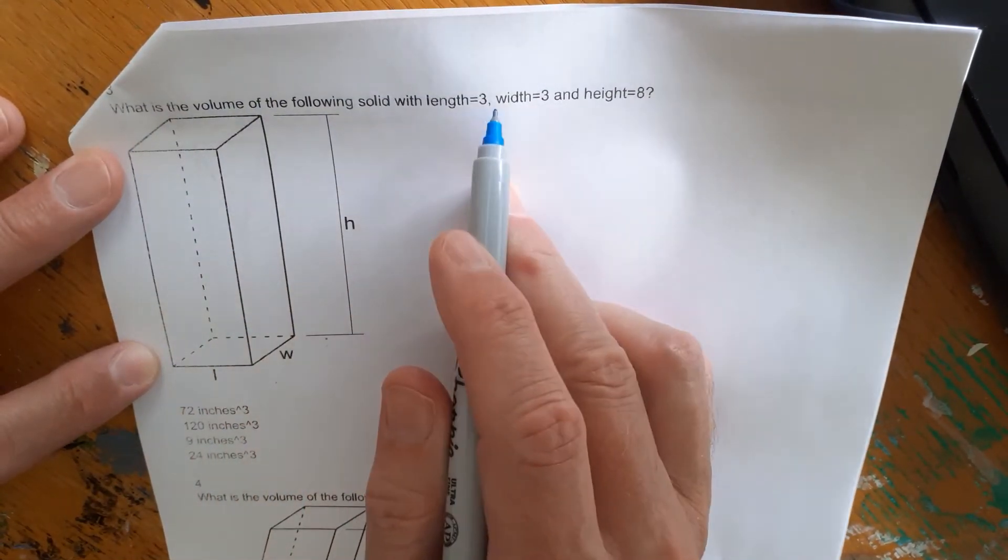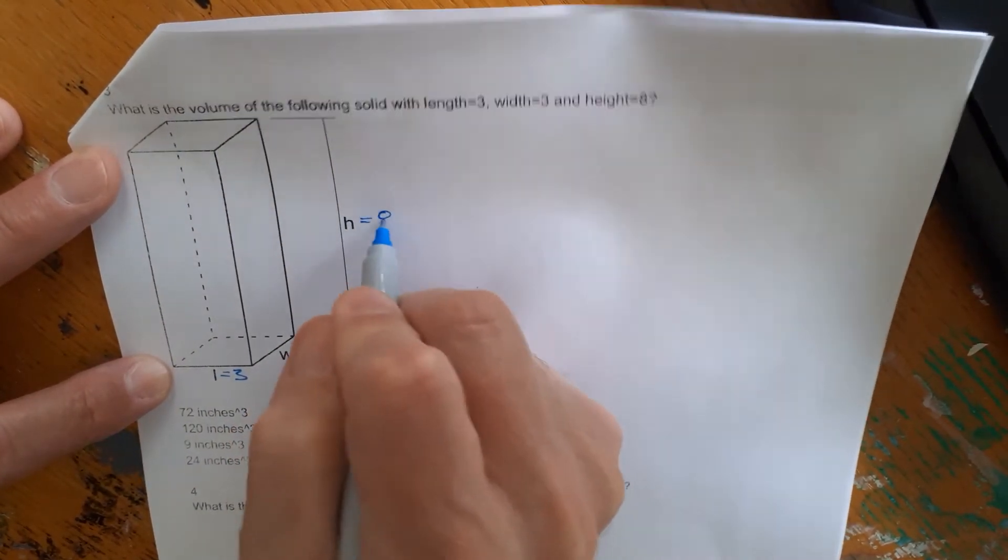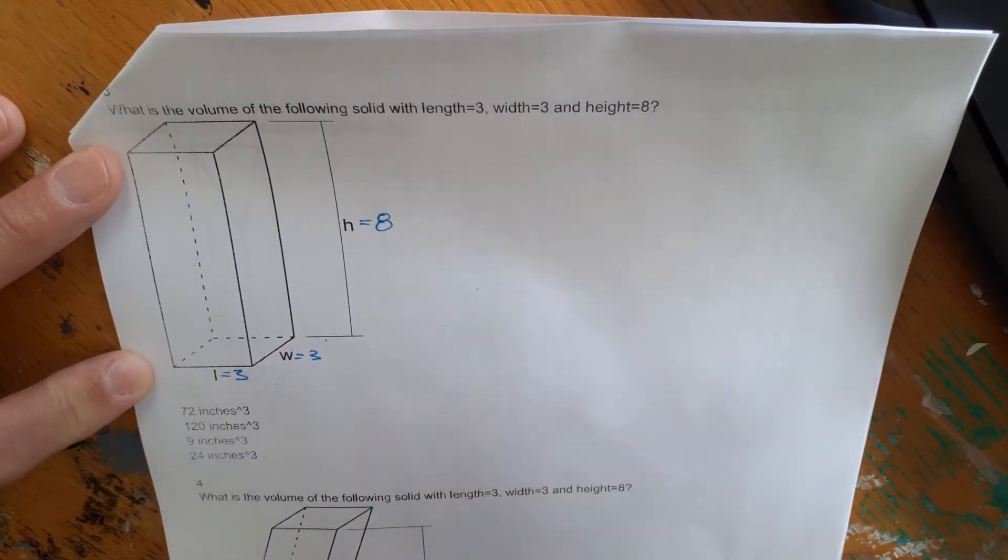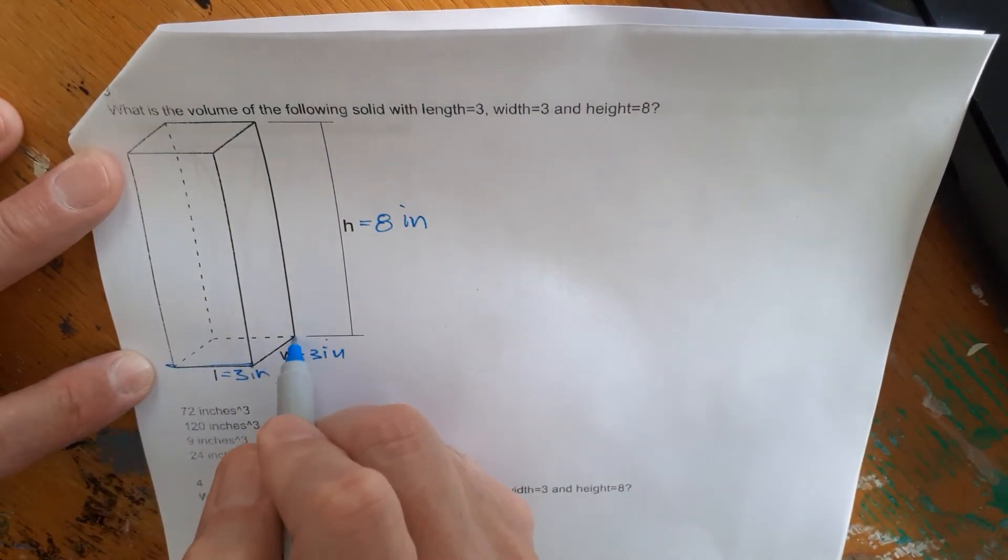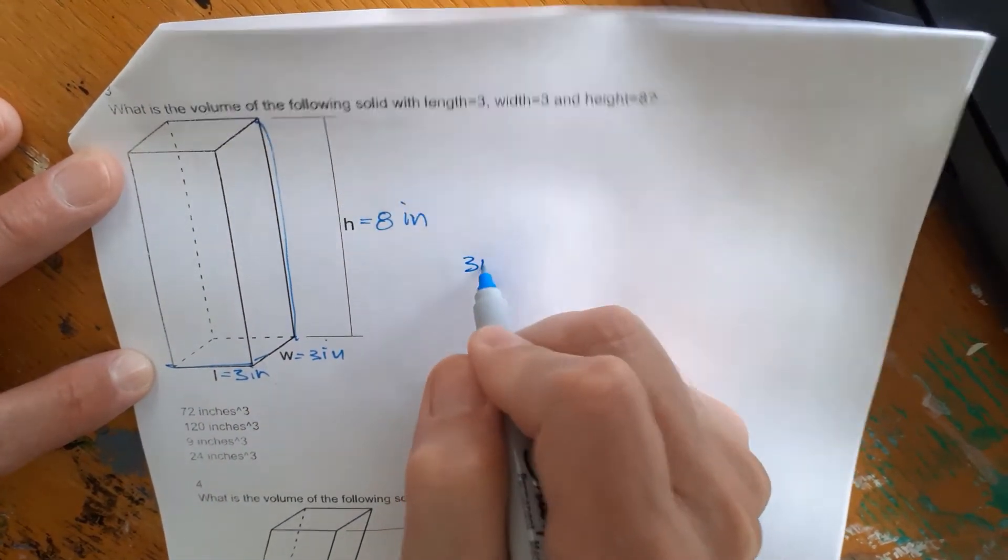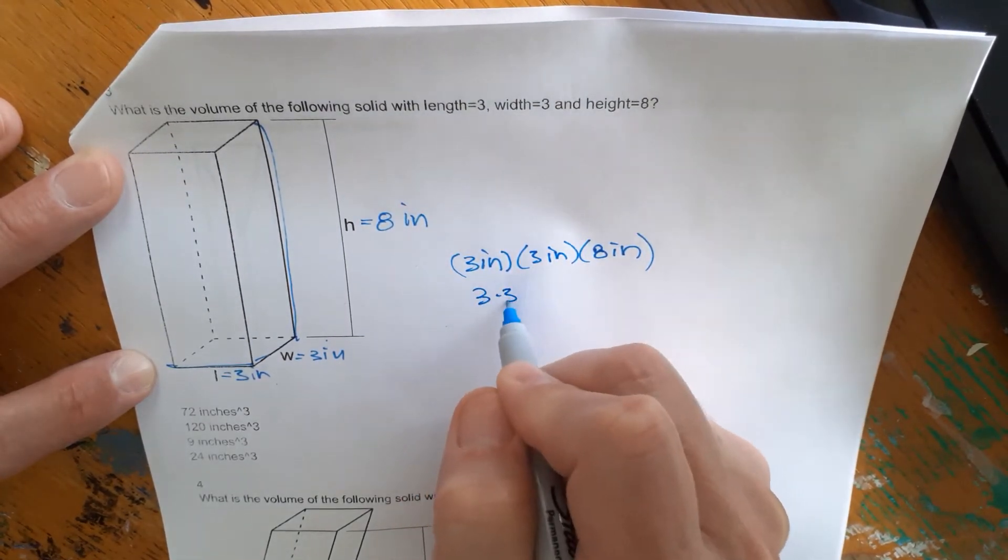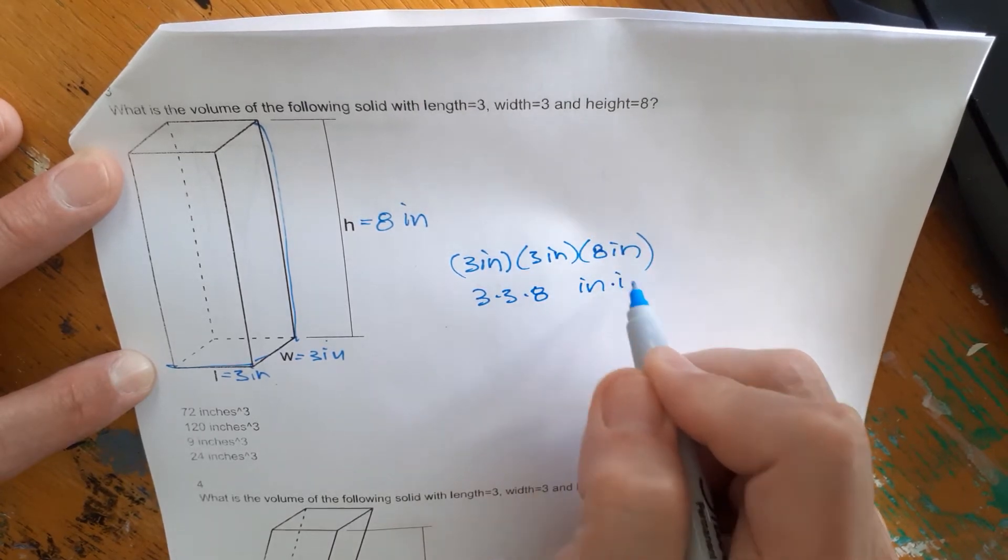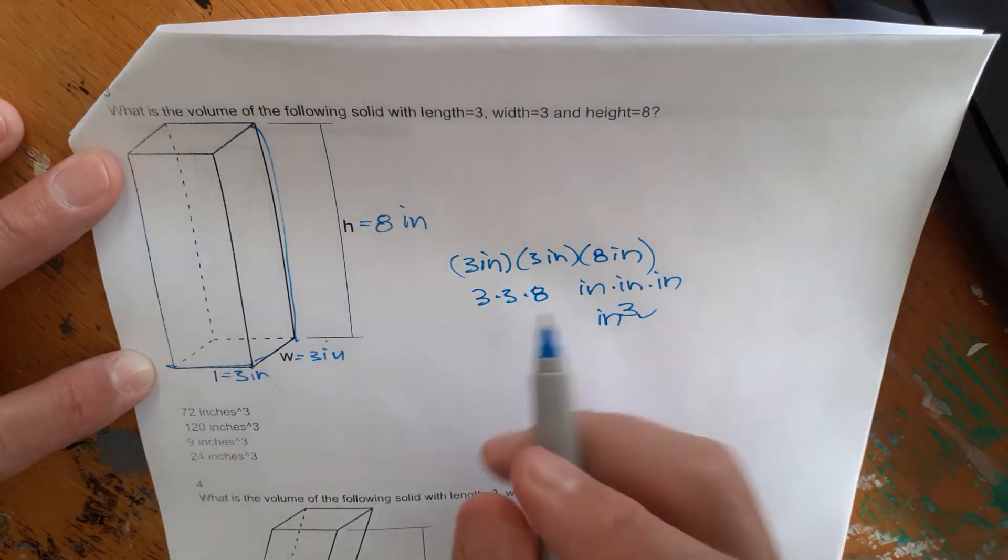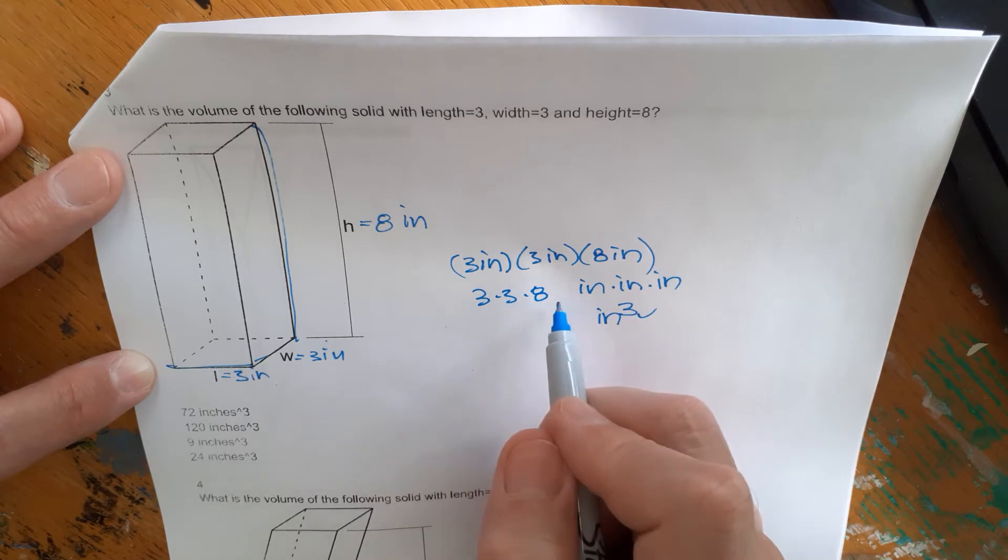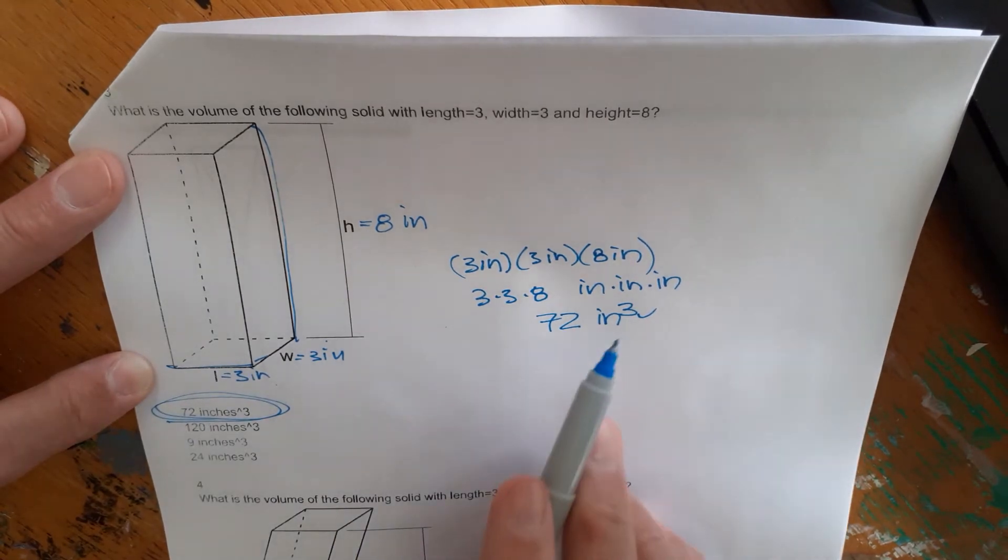What's the volume of the following solid with length three? Now we're saying three here. We're saying width three here and height eight. All of these are inches cubed. So it looks like they are using inches on this one too. It could be units or generic. It doesn't matter. We're going to do length times width times height, which is three inches times three inches times eight inches. Separate out the three times three times eight separate out the inch times inch times inch. This becomes inch cubed, which is so important for us to see those units come into play. Three times three is nine and nine times eight is 72. So 72 inches cubed.